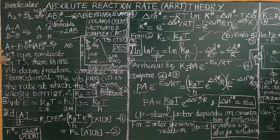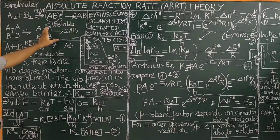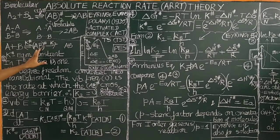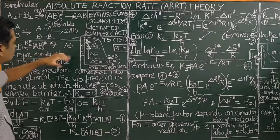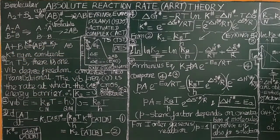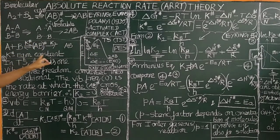In a simplified reaction, A plus B in reversible equilibrium gives this unstable activated complex or transition state. The activated complex is in equilibrium with the reactants. Since the activated complex is unstable, it undergoes decomposition to give the product. The equilibrium is characterized by an equilibrium constant K‡.